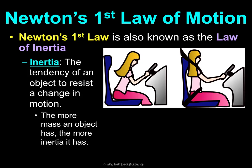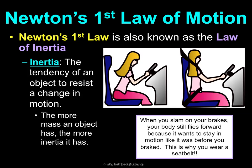We see inertia in a car all the time, and this is why seat belts are important. When you slam on your brakes, your body will fly forward because it wants to stay in motion like it was before — it was moving forward with the car. This is why we wear a seat belt, so it helps your body resist that change in motion instead of wanting to keep flying forward.